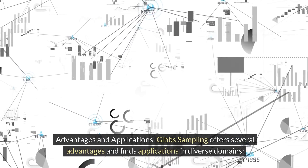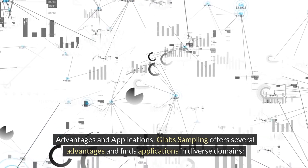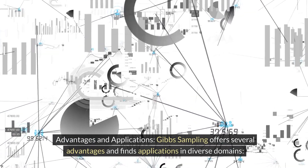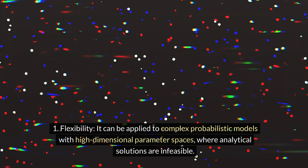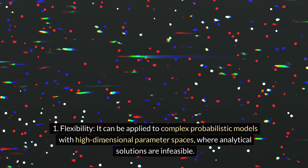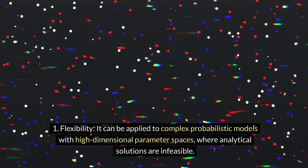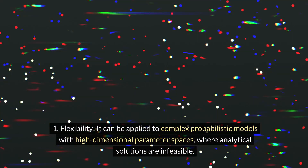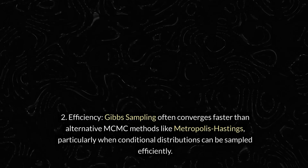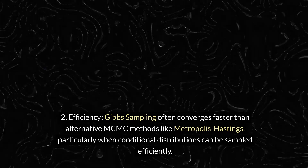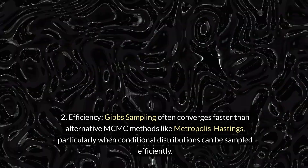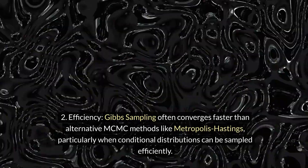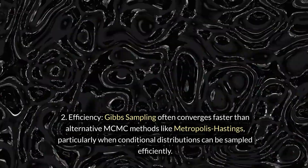Advantages and Applications: Gibbs sampling offers several advantages and finds applications in diverse domains. Flexibility: it can be applied to complex probabilistic models with high-dimensional parameter spaces, where analytical solutions are infeasible. Efficiency: Gibbs sampling often converges faster than alternative MCMC methods like Metropolis-Hastings, particularly when conditional distributions can be sampled efficiently.